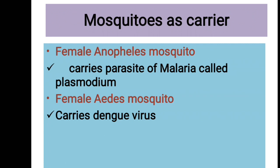The female Anopheles mosquito carries the parasite of malaria called Plasmodium. Plasmodium is a protozoan. The female Aedes mosquito carries the dengue virus, which is responsible for dengue fever.